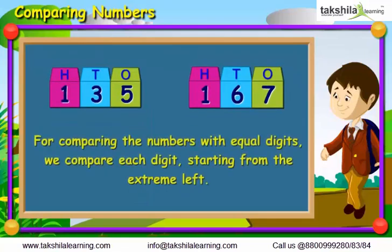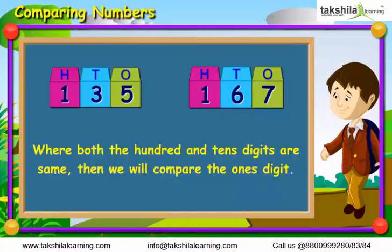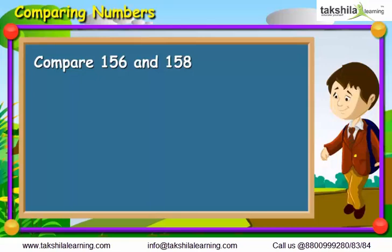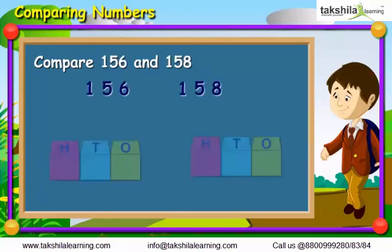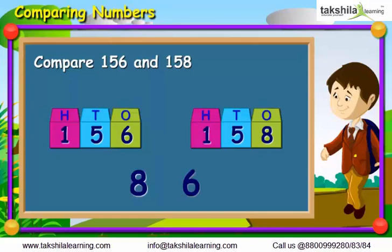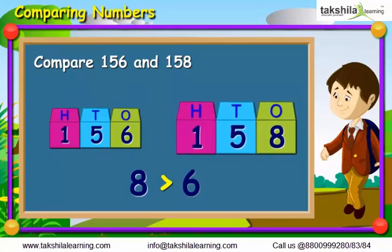The rule becomes: for comparing numbers with equal digits, we compare each digit starting from the extreme left. But in case both the 100th and 10th digits are the same, we will compare the digit in the 1's place. For example, in the case of 156 and 158, digits in both the 100th and 10th places are equal. On comparing the digits in the 1's place, we find that 8 is more than 6. Hence, 158 is greater than 156.